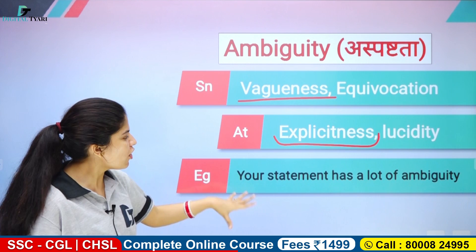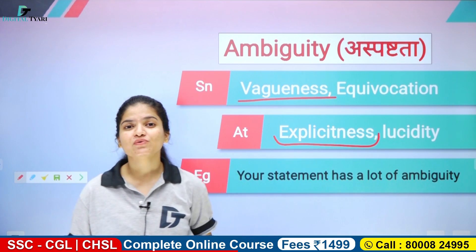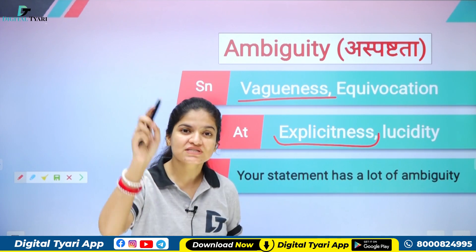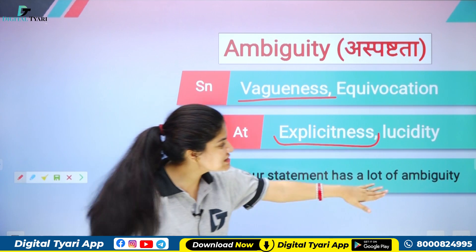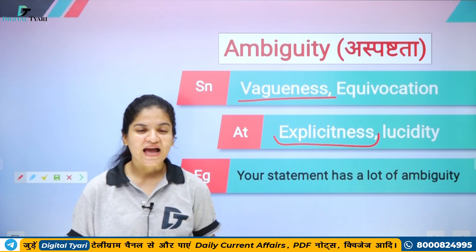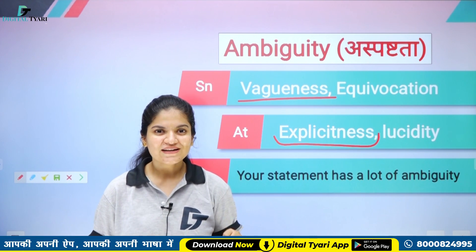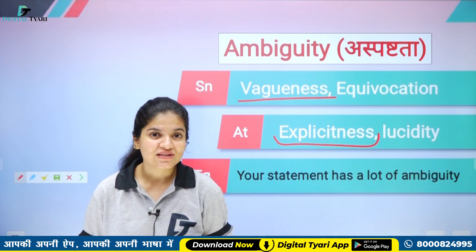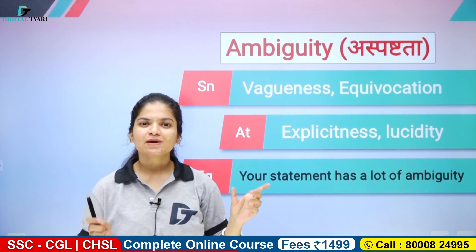Example dekhte hain: 'Your statement has a lot of ambiguity' — aapka jo statement hai, usmein bahut saari ambiguity hai, yani aspashtta hai, aap jo keh raha hai uska ek matlab nahi nikal raha. Ambiguity hona yani aspashtta hona, clear na hona koi baat.